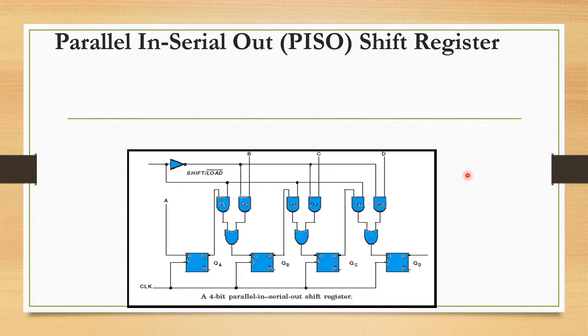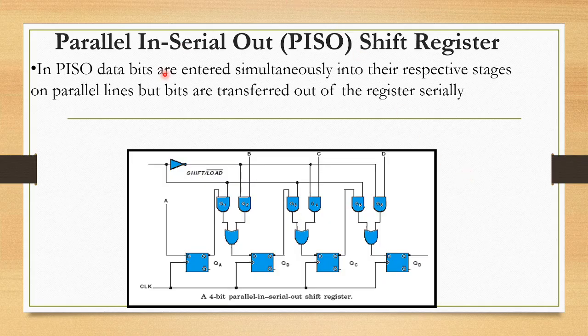Next is Parallel In Serial Out (PISO) shift register. This one is a little more complex. In PISO, data is entered in parallel — all data bits are input simultaneously. But the output is taken out 1 by 1, serially. Data bits are entered simultaneously into their respective stages on parallel lines, but bits are transferred out of the register serially. The figure shows 4 flip-flops with a clock and clear input.